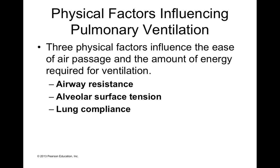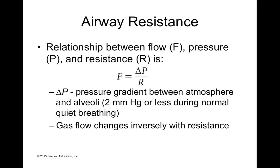Lung compliance is affected by alveolar surface tension, the extensibility of your rib cage, and lung tissue itself. Airway resistance is inversely proportional to flow: decrease resistance and flow increases; increase resistance and flow decreases. The most important factor affecting resistance is airway diameter. If you bronchodilate and make your airway diameter wider, there's less resistance and more flow. If you bronchoconstrict and make airway diameter smaller, you increase resistance and decrease flow.